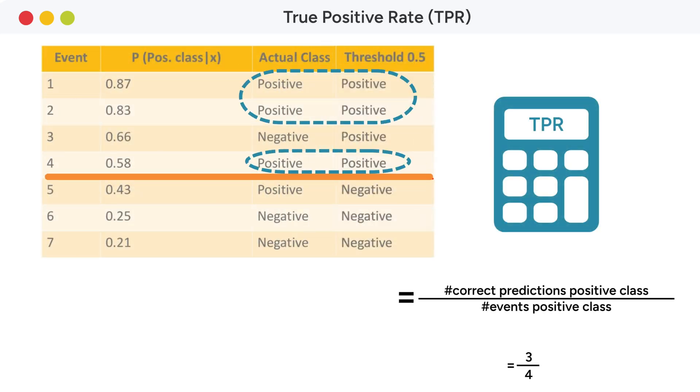The true positive rate is calculated as the number of correct predictions for the positive class divided by the total number of events in the positive class.